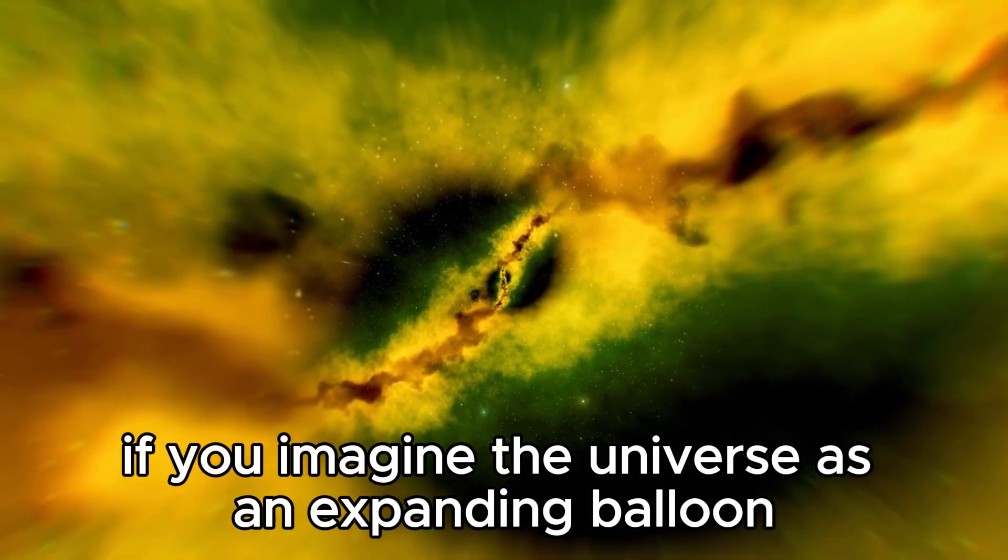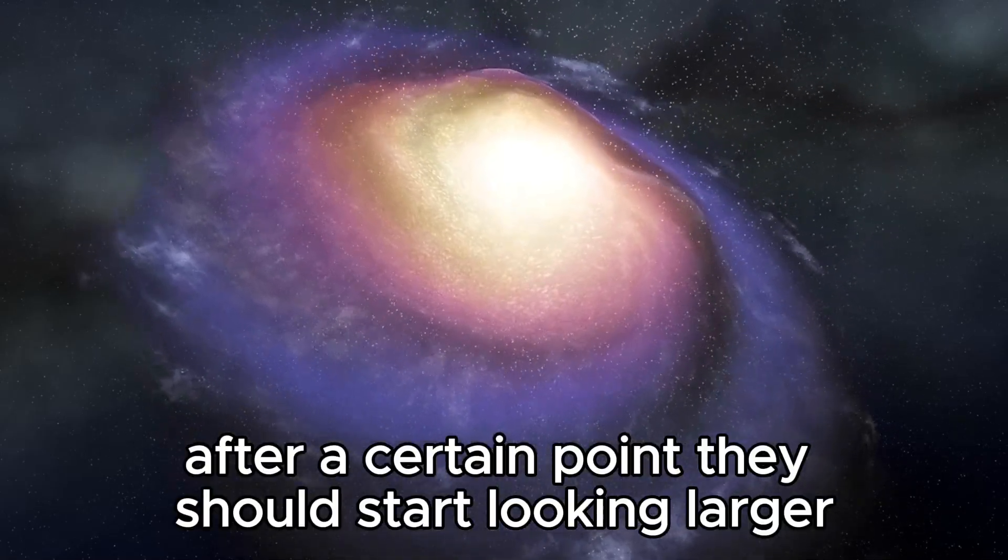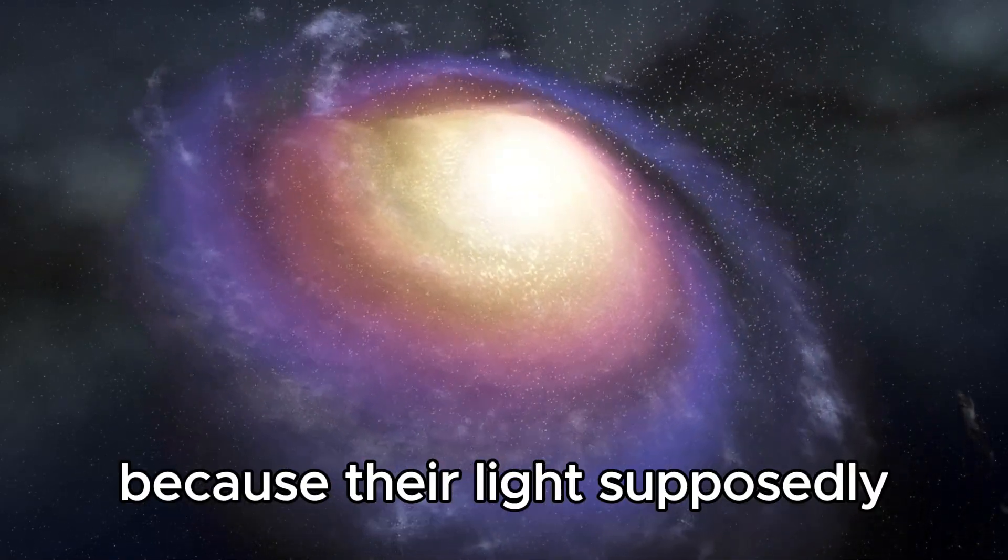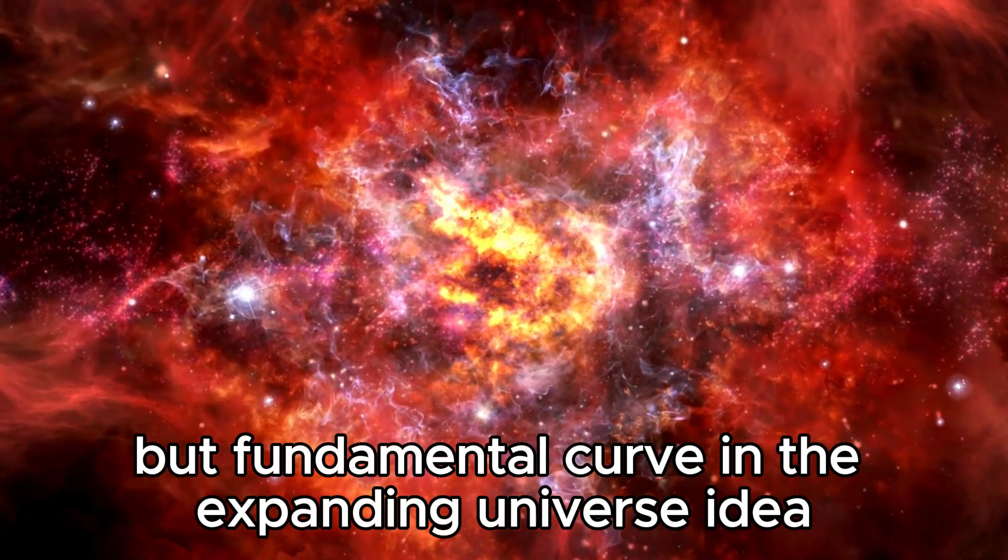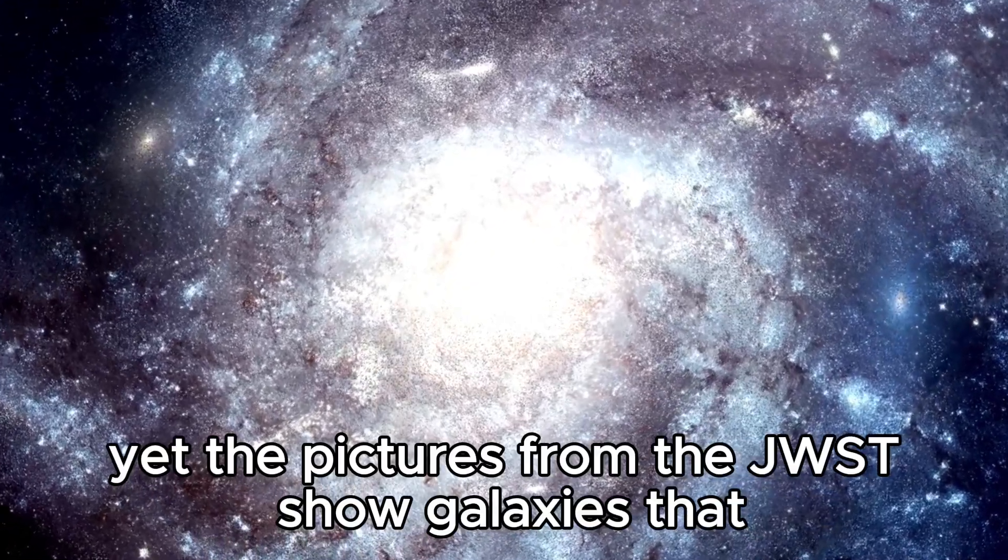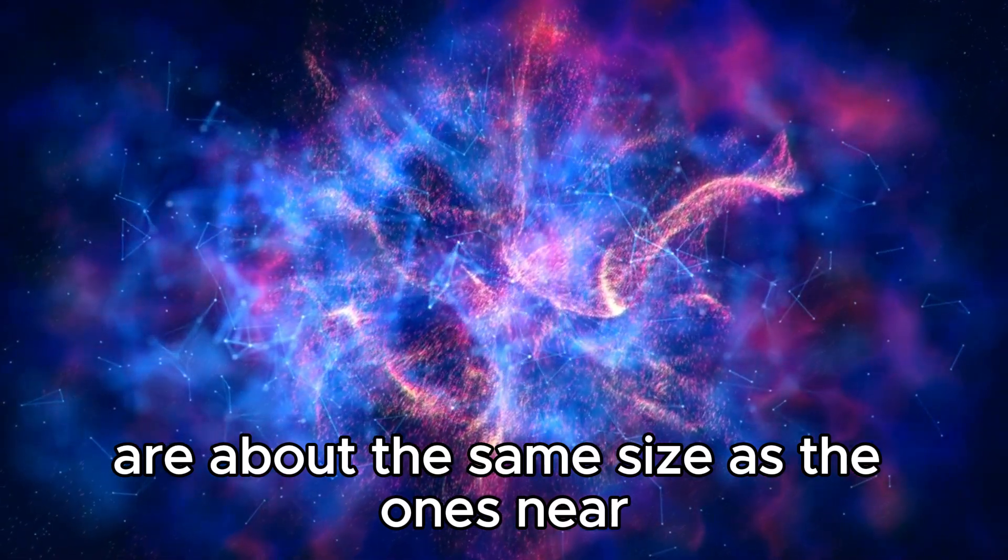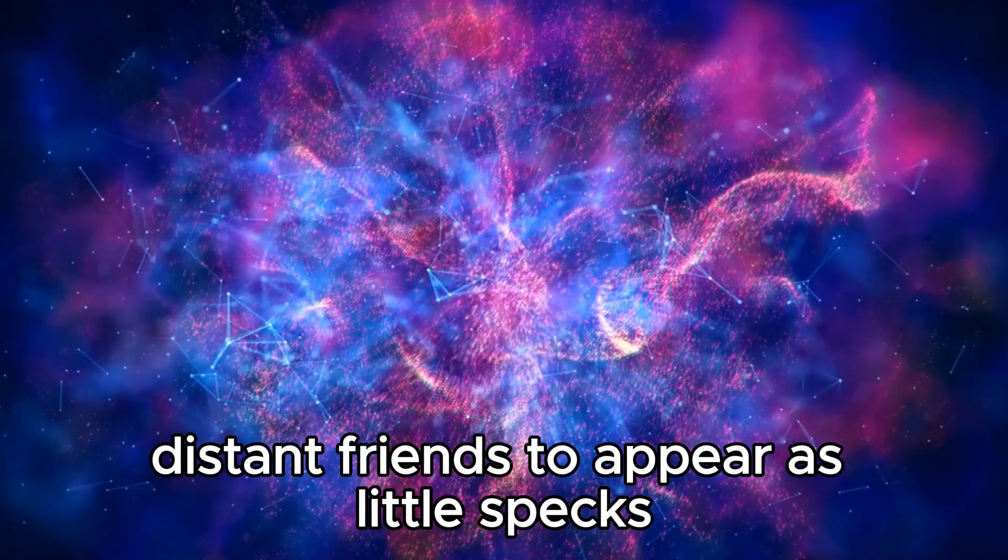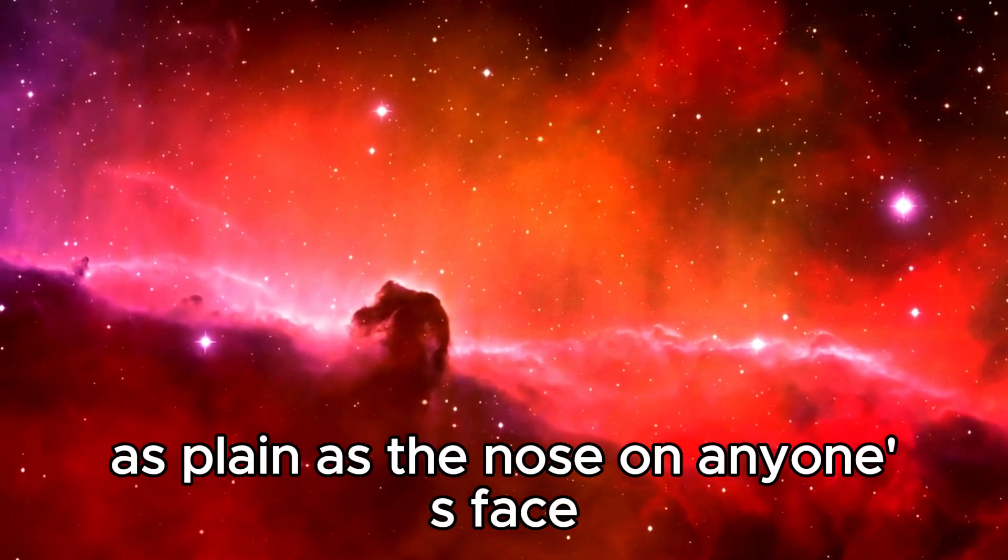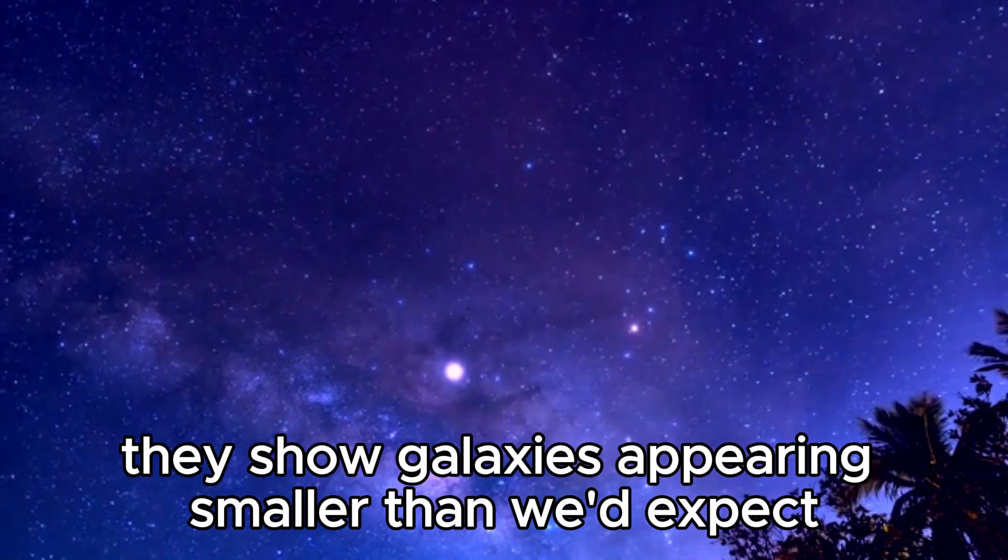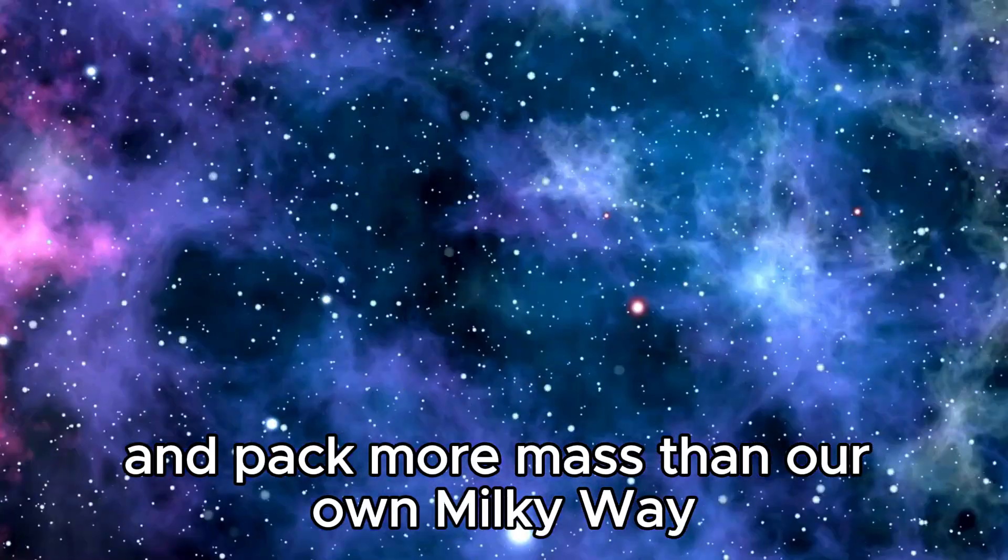Let's try to simplify it. If you imagine the universe as an expanding balloon, galaxies shouldn't look smaller as they move away from us. After a certain point, they should start looking larger because their light supposedly left them when they were closer. It's a strange but fundamental curve in the expanding universe idea. Yet the pictures from the JWST show galaxies that are about the same size as the ones near us.